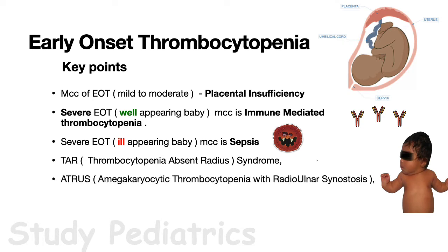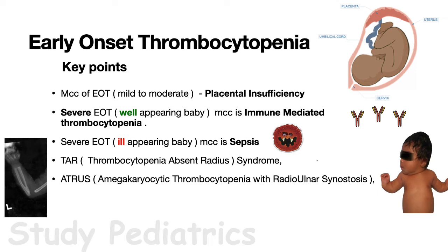Another diagnosis is ATRUS — amegakaryocytic thrombocytopenia with radio-ulnar synostosis. The patient is unable to rotate the forearm due to proximal fusion of the radio-ulnar joint; radiological examination confirms the fusion. Fanconi's anemia is another genetic disorder associated with thrombocytopenia, usually presenting in childhood but sometimes seen in neonates. Thumb abnormalities are typically found, and the chromosomal fragility test is nearly always diagnostic.